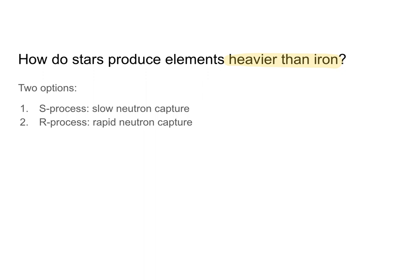There are two ways in which we can produce elements heavier than iron. There is the S process and the R process. The S in S process just means slow, and the R in R process means rapid.